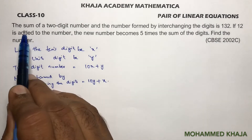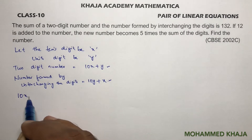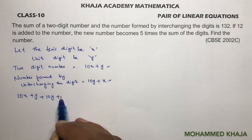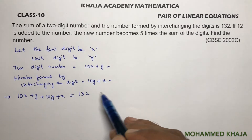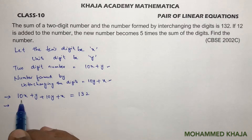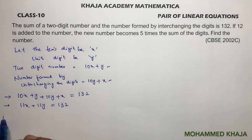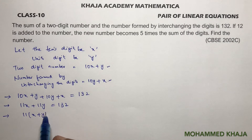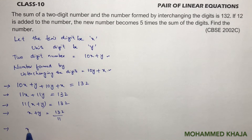According to the first condition, the sum of the two-digit number and the number formed by interchanging the digits is 132. Whenever you add a two-digit number and its interchanged form, the result is always a multiple of 11. So 10x + y + 10y + x = 11x + 11y = 132. Taking 11 common: x + y = 132 ÷ 11 = 12. This is equation 1.